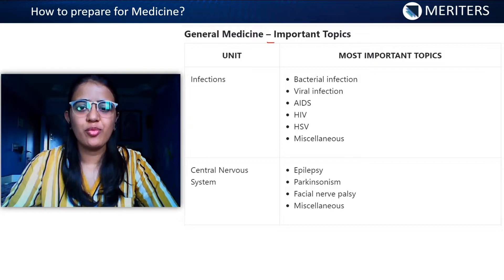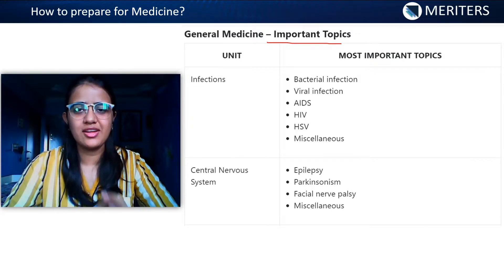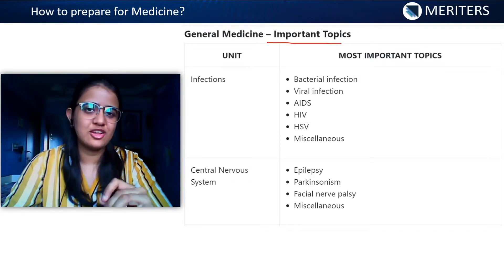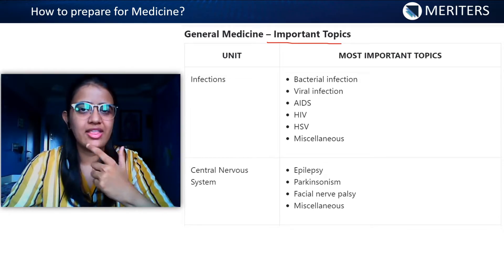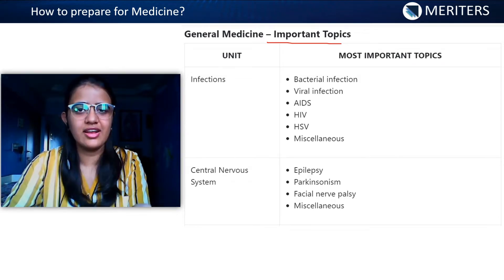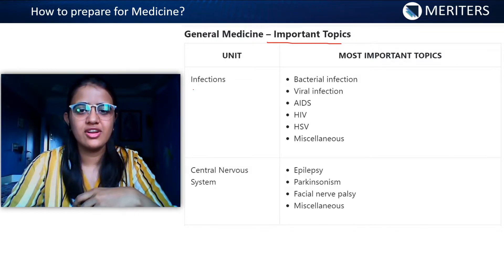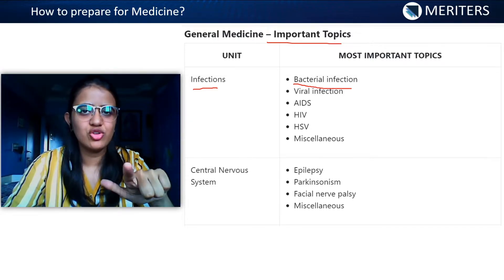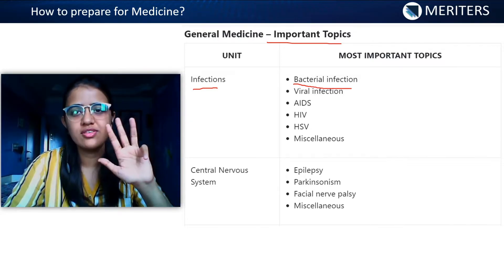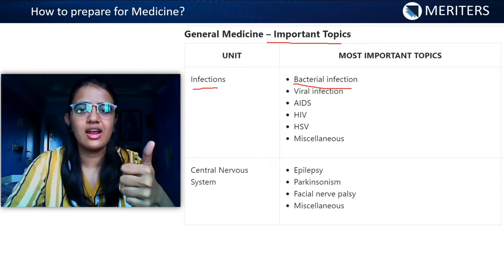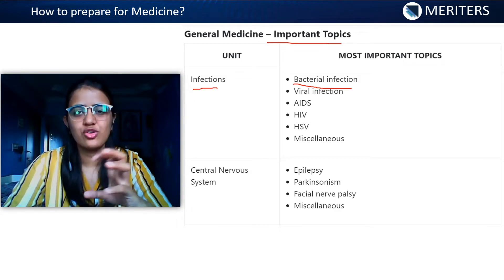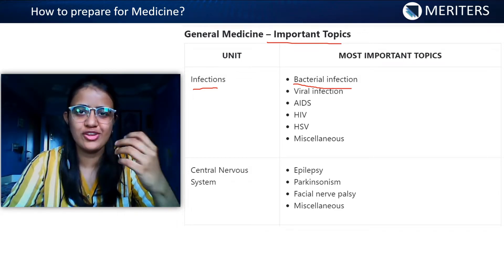Now we'll talk about the important topics for general medicine. For general medicine, it is expected that you should know the diagnosis of the disease and the treatment. First is infection. The first and most important infection will be tuberculosis, then leprosy, then actinomycosis, then syphilis, then clostridium infections, and lastly corynebacterium. Apart from these, you can have a little knowledge about the rest of the infections as well.